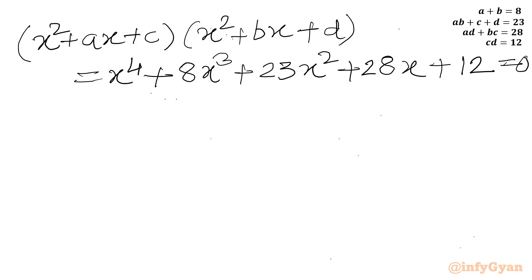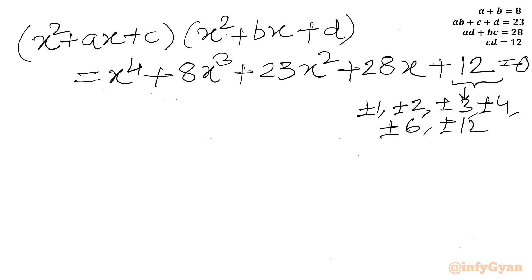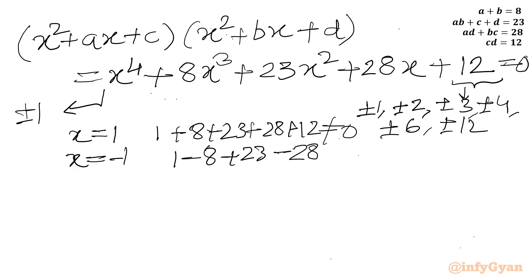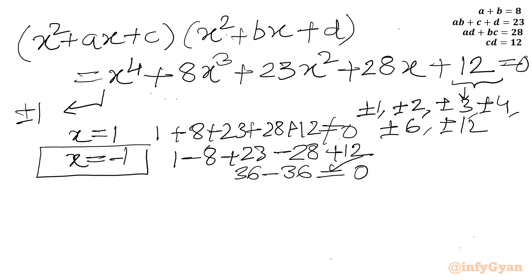I can use the Rational Root Theorem. I will find the eligible factors of 12: plus or minus 1, plus or minus 2, plus or minus 3, plus or minus 4, plus or minus 6, plus or minus 12. The leading coefficient gives plus or minus 1. If I apply x equals 1, all coefficients are positive so it won't satisfy. Now trying x equals negative 1: 1 minus 8 plus 23 minus 28 plus 12 equals 36 minus 36 equals 0. So x equals negative 1 is our base solution.